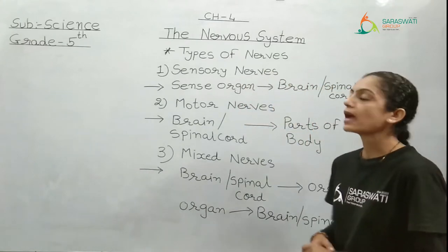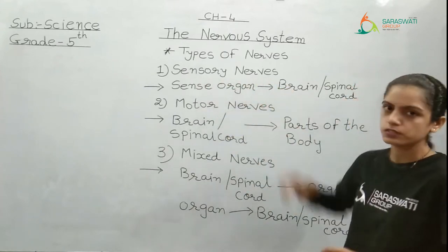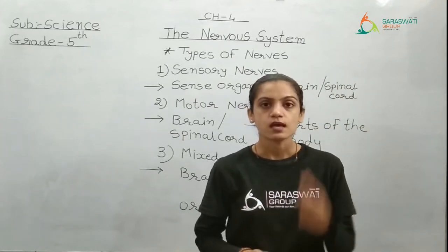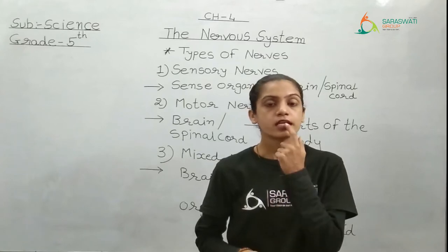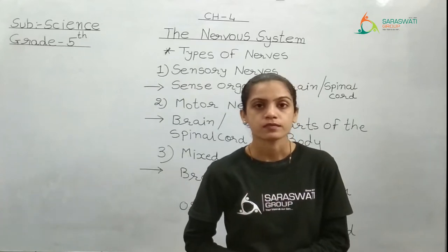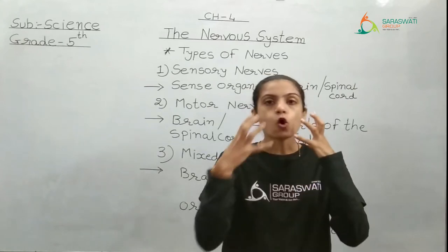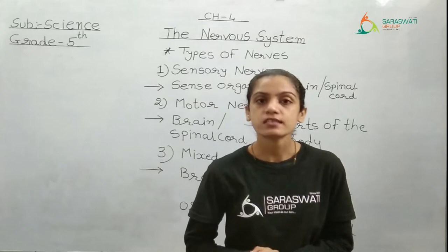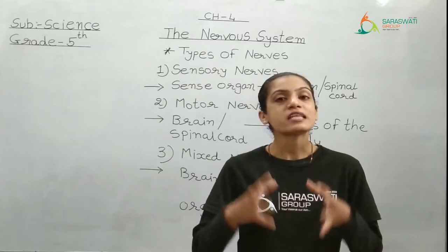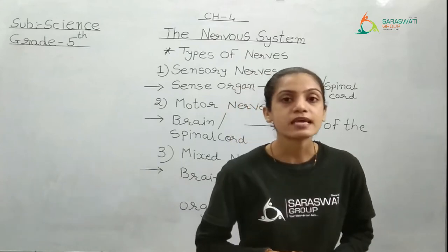On the board I have written the types of nerves. There are three types of nerves. The first one is sensory nerves. In our body we have five sense organs: eyes, nose, tongue, ears, and skin — the bigger one which is covering our entire body. There are certain types of nerves connected with all these sensory organs, and these nerves are known as sensory nerves.